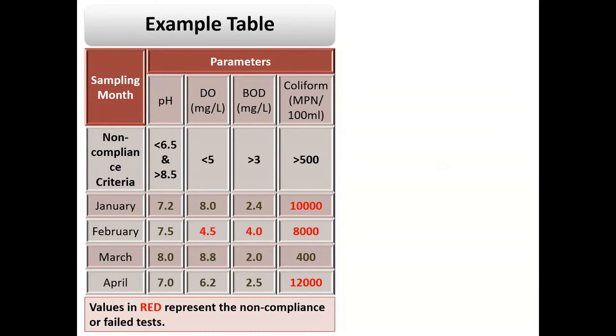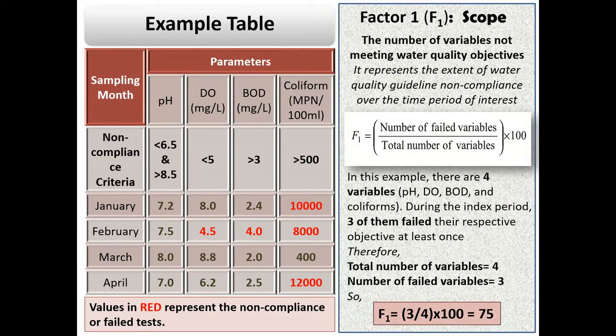Let's understand the factor scope with the help of an example. In the adjacent table, you can see that four parameters are considered: pH, DO, BOD and coliform count. Following a relevant guideline, the limit or non-compliance criteria is defined for each parameter in the table.